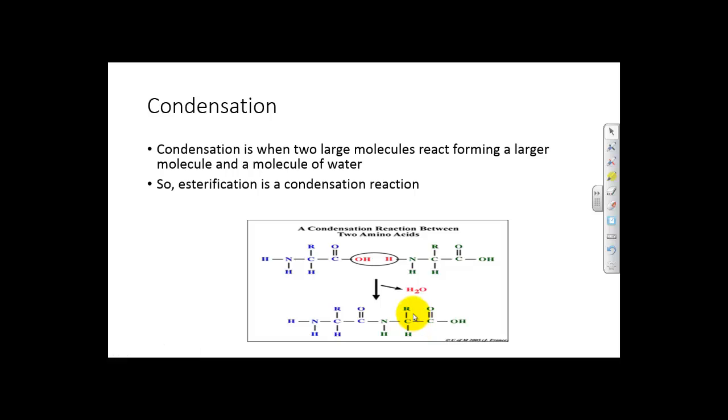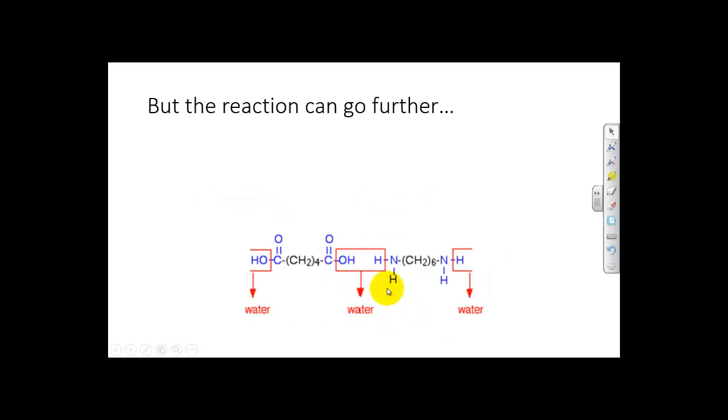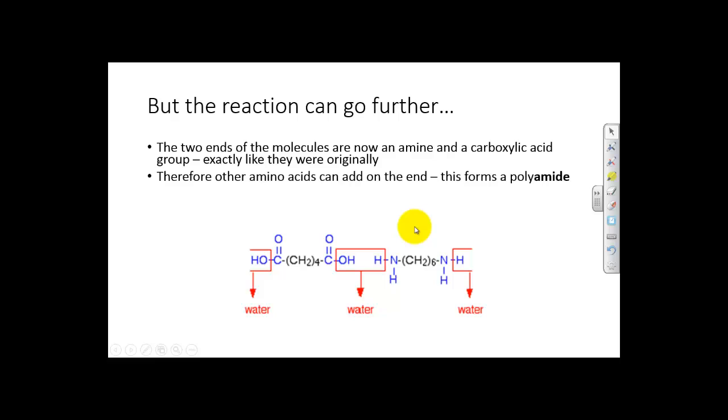So esterification, that's a condensation reaction, as is this one. But that reaction can go further. We had two amino acids there. If we looked at the edges, you still had an amine and a carboxylic acid at either end of the molecule. So it's exactly how they were originally. So we can tack more on either end in the same way we did originally. And that will form us a polyamide, like what's going on here. We just take water away from each of the linking stations and we sew together a really long molecule. Same thing could happen if we had a carboxylic acid and alcohol groups to form a polyester.